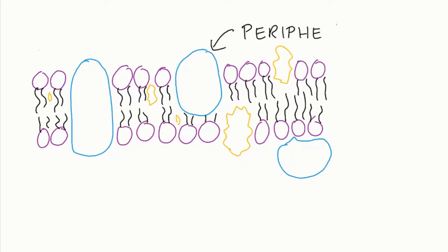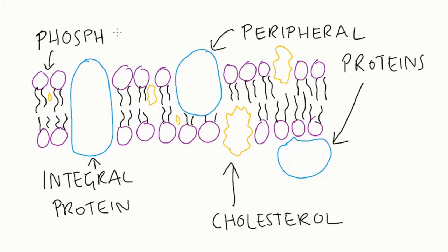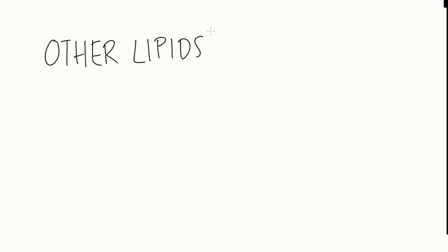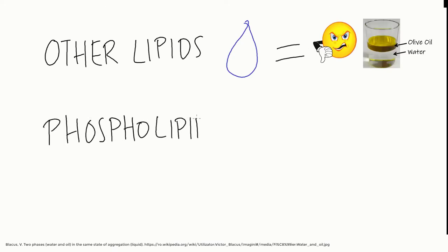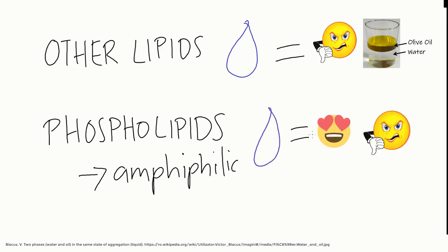It contains various proteins, cholesterol, but the most abundant element are the phospholipids. Unlike other lipids, which hate water — think about olive oil that can't be mixed with water — phospholipids are amphiphilic molecules, which means they like and dislike water at the same time. It sounds like a very complicated relationship, but the secret lies in their internal structure and the way they interact with each other.